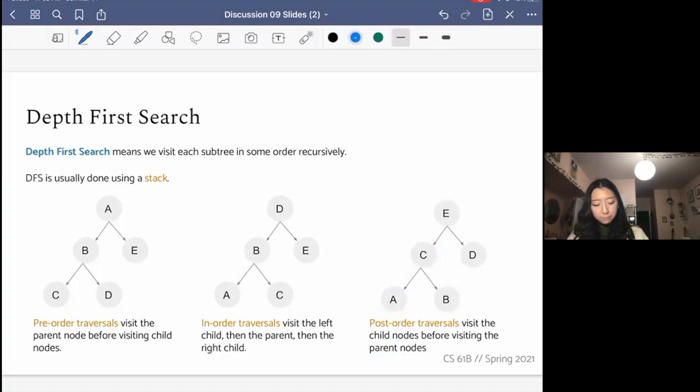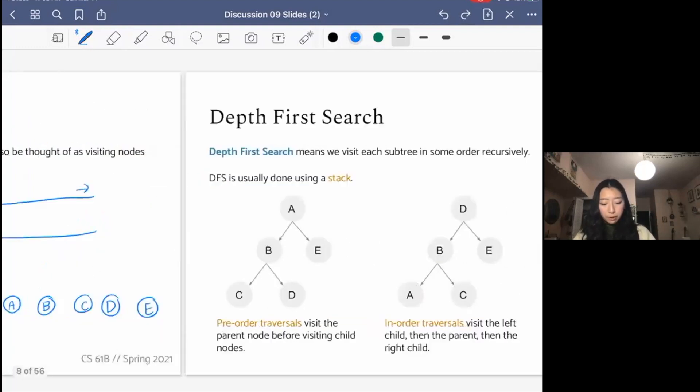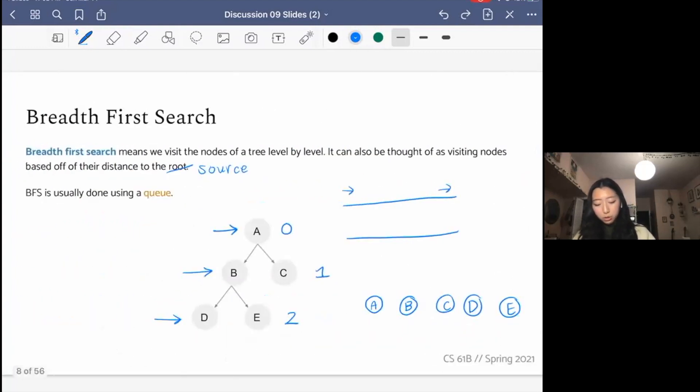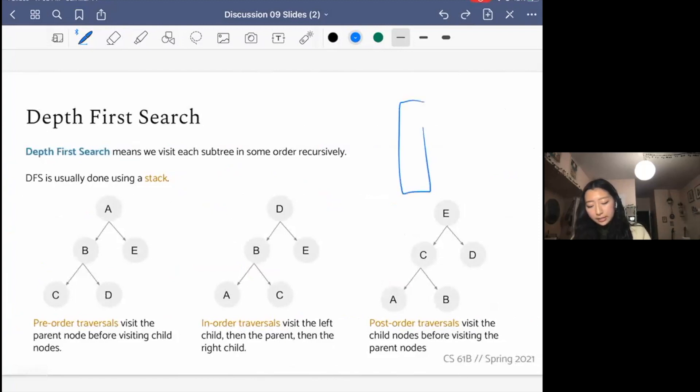The important thing is that for depth-first search, rather than prioritizing getting everything on the same level first, like how BFS did, we were digging deeper in some way first. And in contrast to breadth-first search, which used that queue, DFS is usually done using a stack. And so that means the first thing in is the last thing out. And things get pushed in and come out from the top. I will not be walking through all these examples with the stack, but you can sort of walk through it yourself and see that it works.